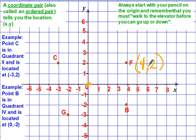We call those the coordinate pair or the ordered pair. We always do the x-value first and then the y-value.